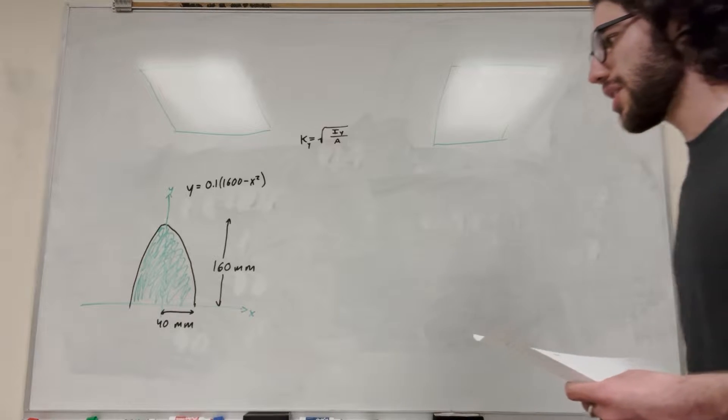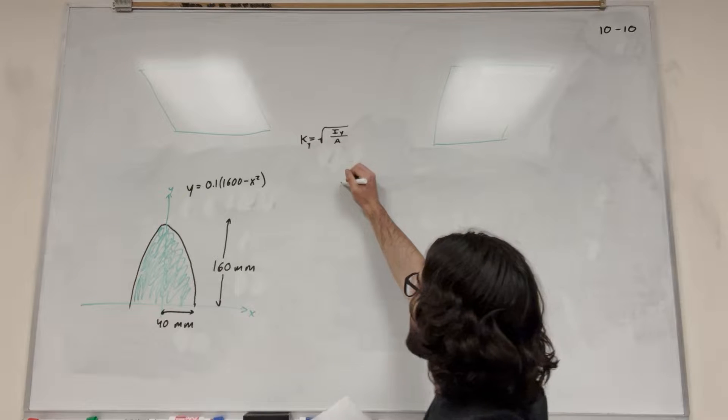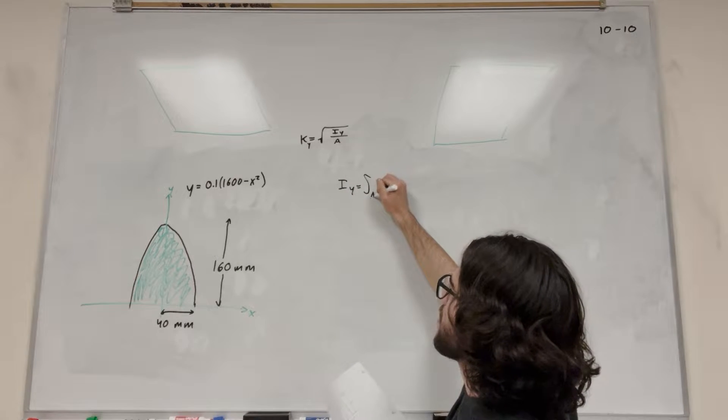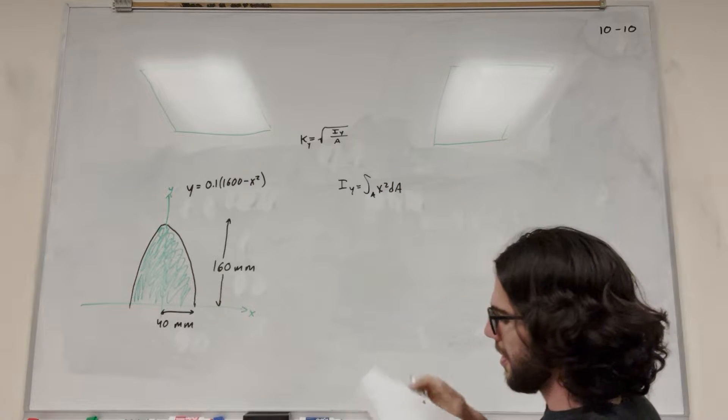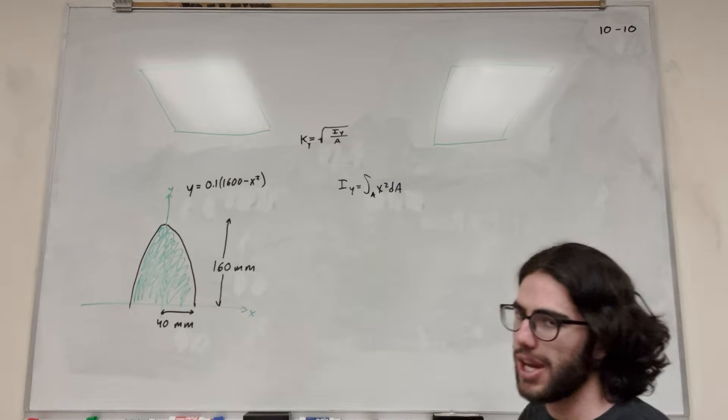So I have a whole bunch of videos on this. If you haven't seen those already, maybe check them out. But I'm going to walk you through it. So the equation for the moment of inertia around the y-axis is the integral over the area of x squared dA. So this is our equation here. So we need to find out what dA is, because we can't just integrate dA.